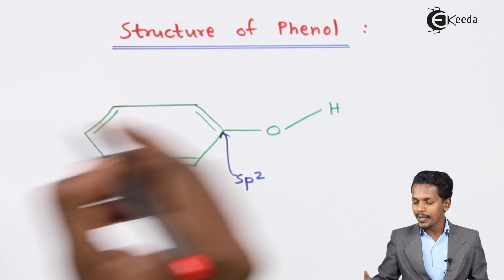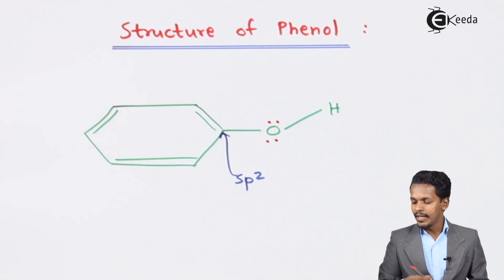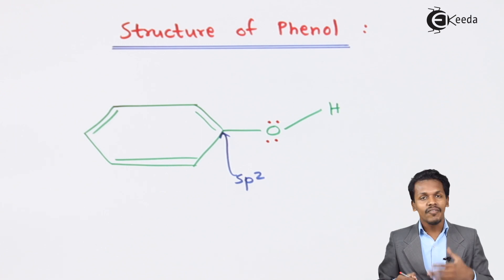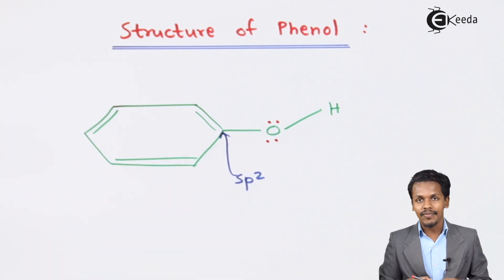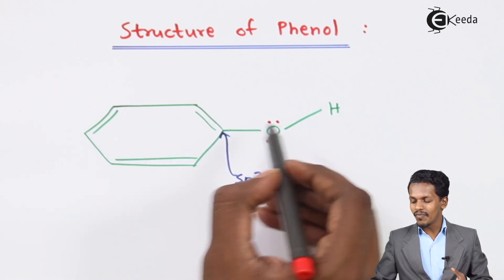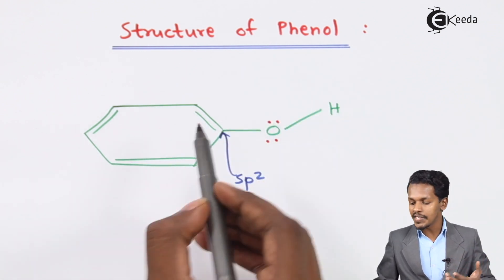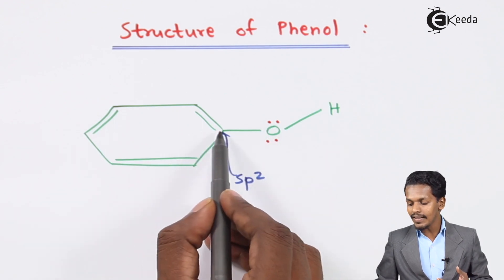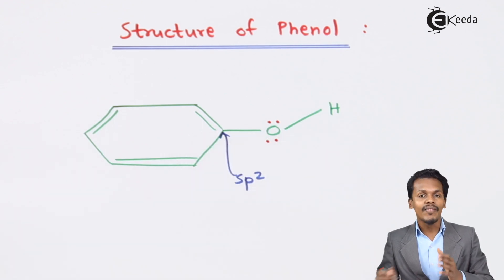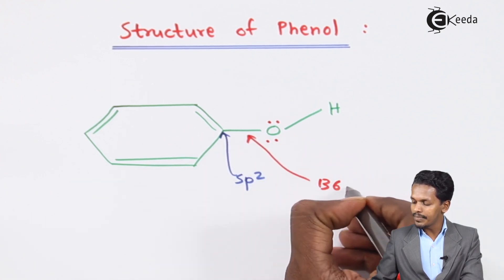This sp2 hybridized carbon has the oxygen atom attached to it, and this oxygen atom consists of lone pairs of electrons. This OH group attached to the sp2 hybridized carbon makes the oxygen atom more electronegative. The oxygen atom is attached to the conjugated system, and the distance between this oxygen and this carbon is 136 picometers.